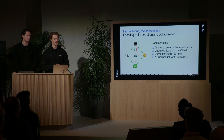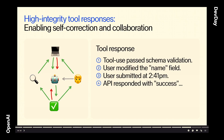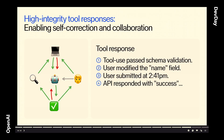One last thing: high integrity tool responses, which we take very seriously. You could think of an agent as interacting directly with an API, but in a system like SANA, the agent is actually interacting with validators first, and with the user — as Jerry showed, the user can make modifications to a request before submitting it, or cancel it. We think it's important to display all these system interactions to the agent so it can make intelligent decisions. An example tool response we send back: one, tool use passed schema validation; two, the user modified the name field; three, the user submitted at 2:41 PM; four, the API responded with success. This ensures our agent always knows exactly what's going on and enables high-collaboration workflows.